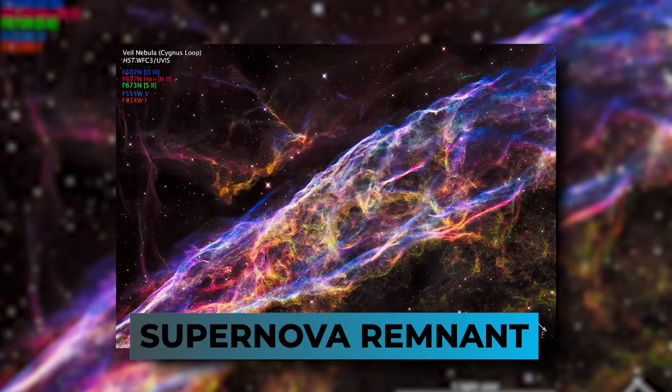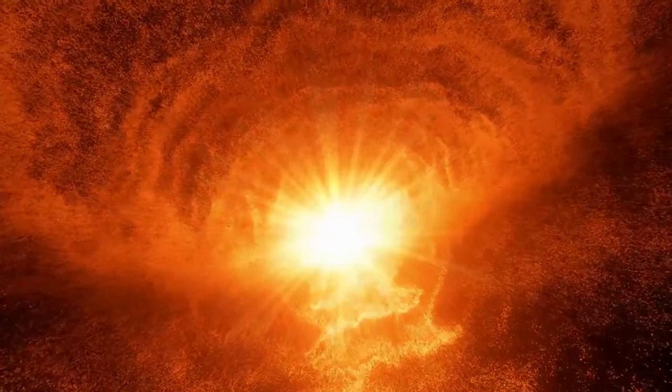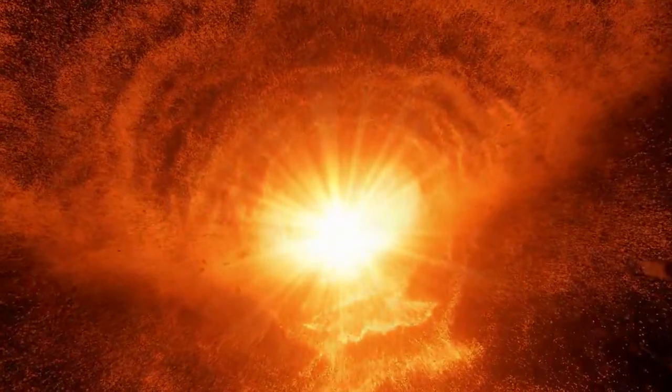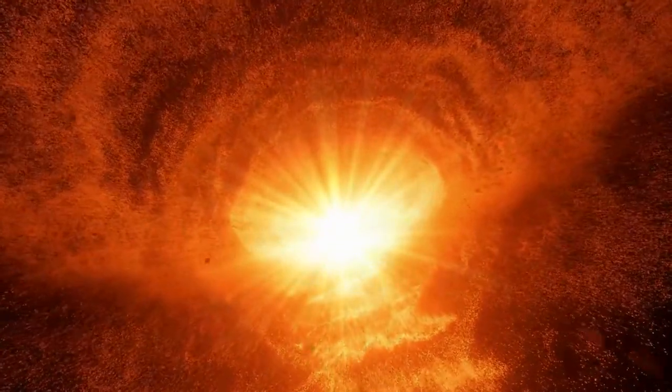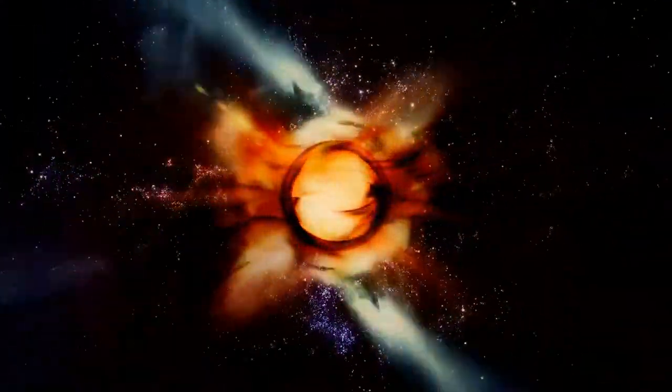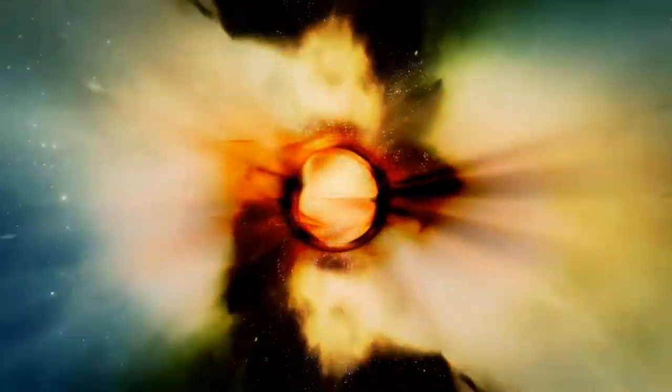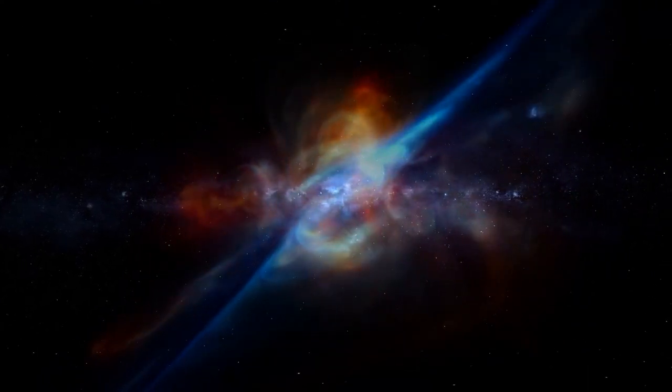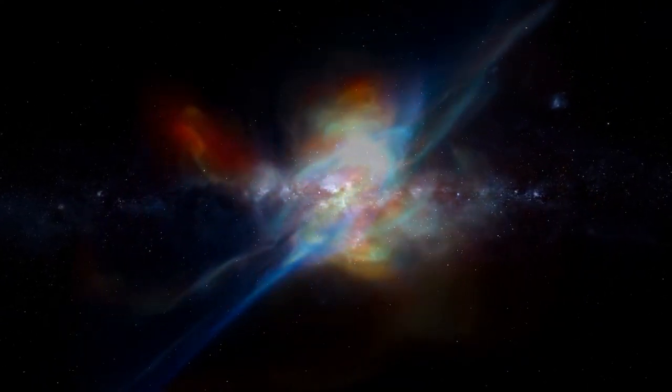Finally, supernova remnant. Stars with a high mass die in a very different way than stars with a low mass. Since they are much bigger, the star's gravity pulls down on them much harder. This lets them fuse together much heavier elements. As soon as a star with a lot of mass makes iron in its core, it is doomed.